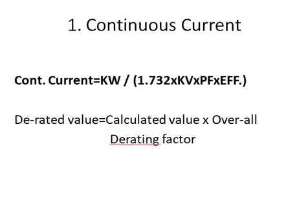Continuous current rating is calculated as: motor kilowatt rating divided by root 3, into voltage level — whether it is 400V, 480V, 6.6kV, or 11kV — into power factor, into motor efficiency. After calculating the continuous current rating, we need to apply derating factors. This derating factor includes temperature correction factor, depth of cable laying, and cable laying configuration — whether it is single-core cable, multi-layer, or single-layer configuration. The overall derating factor is calculated by multiplying all these factors.